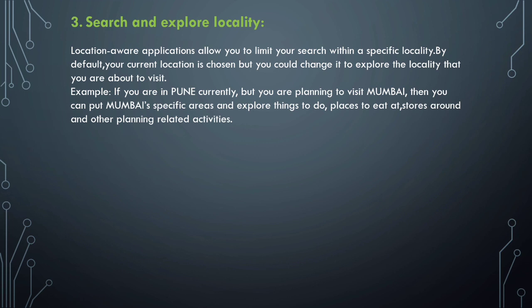Next is search and explore locality. Location-aware applications allow you to limit your search within a specific locality. By default your current location is chosen, but you can change it to explore another location — for example, if you are in Pune and planning to visit Mumbai, you can search Mumbai-specific areas, places to eat, stores, and party planning activities. If you want to organize a party in a Mumbai area like Malabar Hill and don't know the best restaurants or hotels, you can search for that specific location.